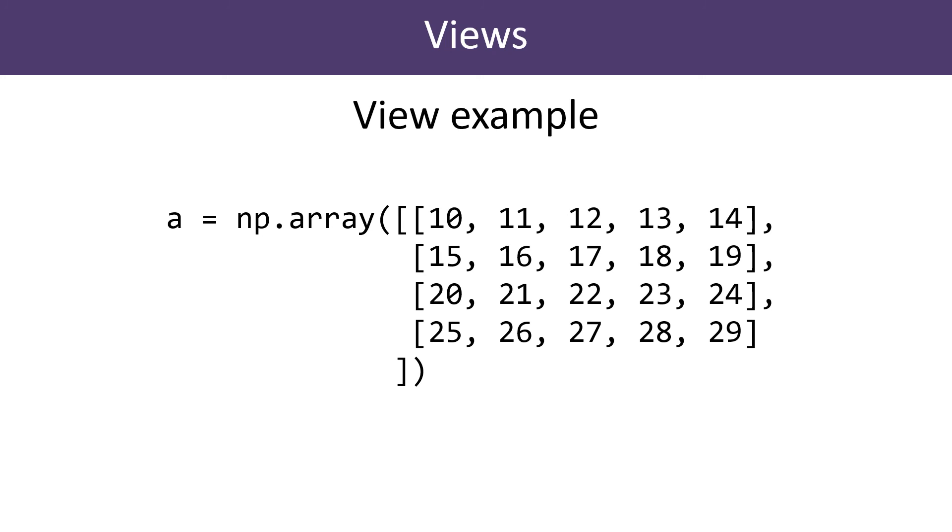Although the array represents rows and columns, computer memory is one dimensional. Memory consists of a list of locations that are addressed sequentially. A view allows NumPy to know where to look for each element.